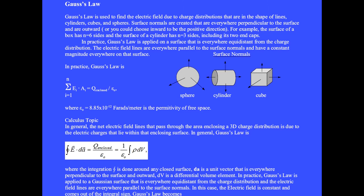When the Gaussian surface is chosen so that the electric field is constant everywhere on it, E comes out of the integral sign, and the flux integration is replaced by a sum of fluxes over the individual surfaces.